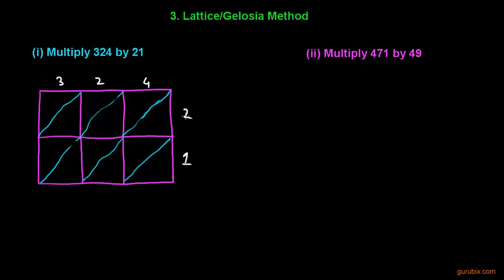We multiply 4 by 2 to get 8 — write 0 above the diagonal and 8 below. 2 times 2 is 4 — write 0 above and 4 below. 3 times 2 is 6 — write 0 above and 6 below. Then 4 times 1 is 4; 2 times 1 is 2; 3 times 1 is 3 — writing each result in the corresponding box.